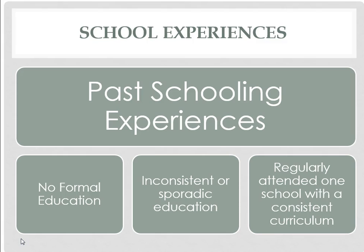When it comes to schooling experiences, this is important to keep in mind as it relates to English language learners. Some students have no formal education at all; some may have inconsistent or sporadic education; and then there's another group that may have regularly attended school with some level of consistent curriculum. When those students are coming into our mainstream or inclusion classrooms, we need to recognize that those types of schooling experiences are critical and have a grave impact on that student's ability to be successful. We must not make assumptions but remain cognizant of those differences.